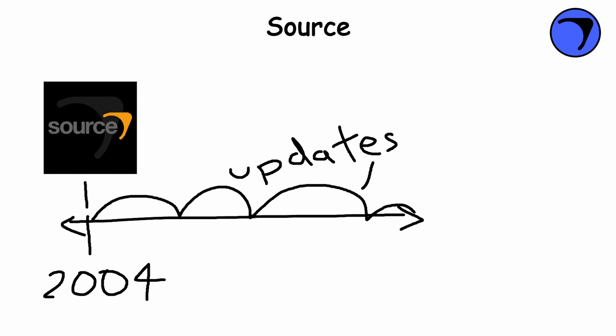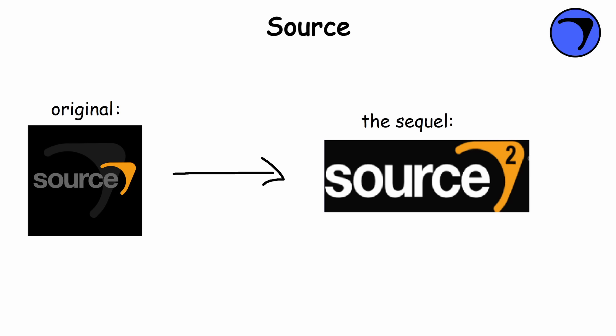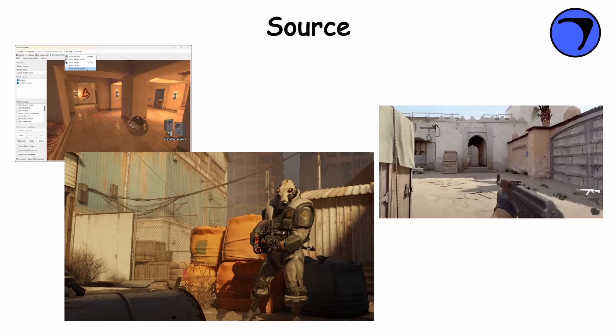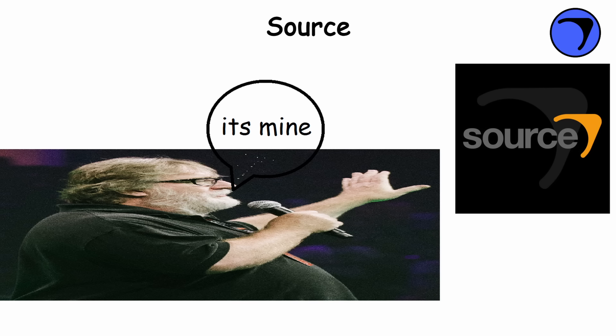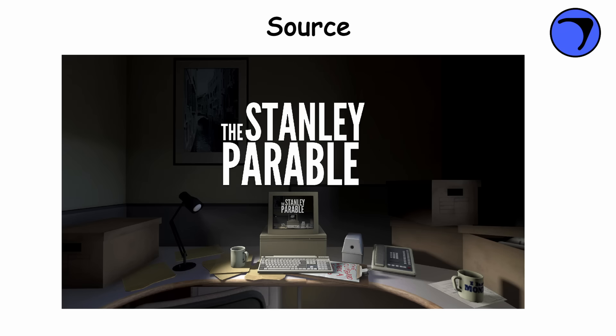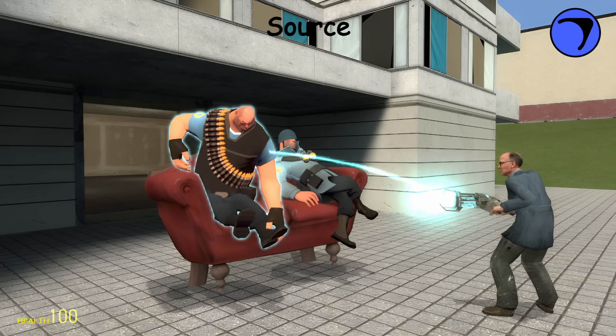The engine was first released in 2004 with updates and improvements over the years. Source 2 was introduced as a significant upgrade, providing enhanced graphical capabilities, improved physics simulation, and better support for modern hardware. While the Source engine is known for being mostly used by Valve, there are games outside of Valve that use it, like the Stanley Parable. Source is usually recommended to make mods of Valve games rather than original projects.